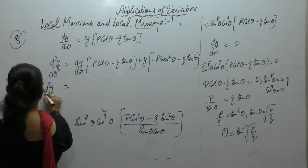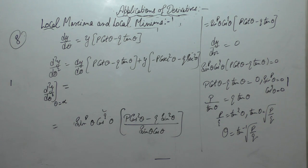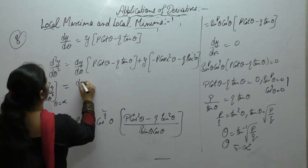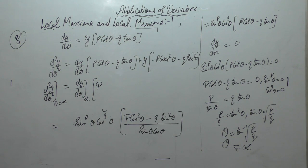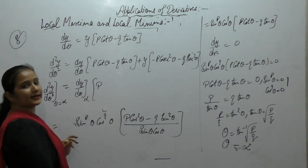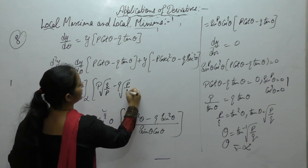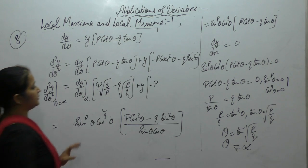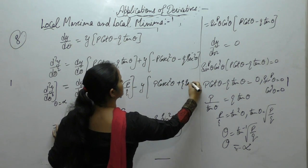Now find the value at theta is equal to alpha. Let this value as alpha. Then dy upon d theta at alpha. If tan theta is root p by q, then cot is reverse of this. Tan is root p upon q. Plus y minus p cosec square. Take negative common here. Plus q sec square.